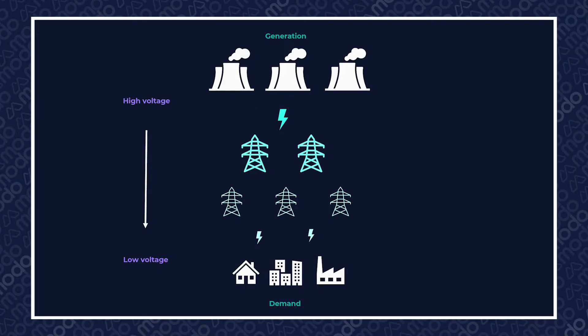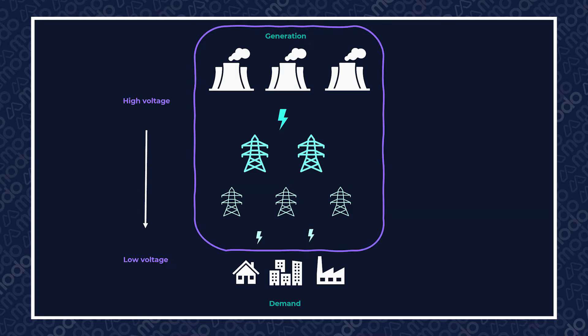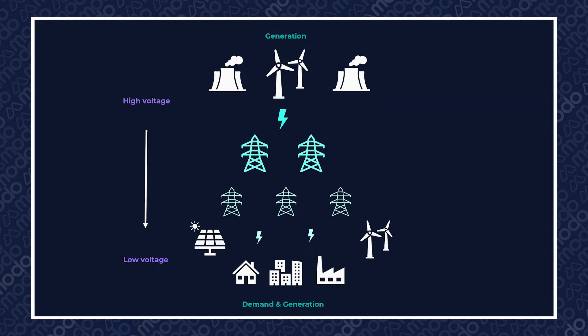Enabling local flexibility to help manage the peaks and troughs in demand and supply on existing distribution networks is key. A traditional power grid has a transmission system on which centralized large power stations provide the power, with that power flowing down to lower voltage distribution networks where the demand is. As we move towards a decentralized, decarbonized, distributed power grid, a lot of the generation moves onto the local networks.